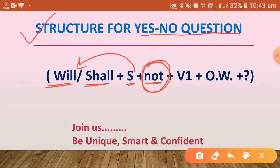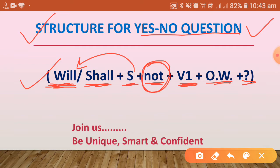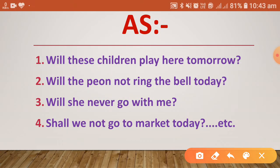If there is no negative sense, we go directly to the first form of the verb. Let us see some examples. Number one: 'Will these children play here tomorrow?' The sentence starts with 'will' — the helping verb — 'these children' is the subject, 'play' is the main verb, and 'tomorrow' is the other word. There is no negative sense, so there is no 'not' after the subject.